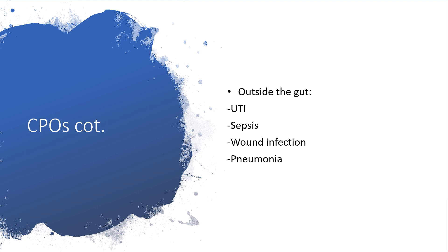When carbapenemase-producing organisms are found outside the gastrointestinal tract, they could be causing urinary tract infection, sepsis, wound infection, and in the lung they could cause pneumonia.